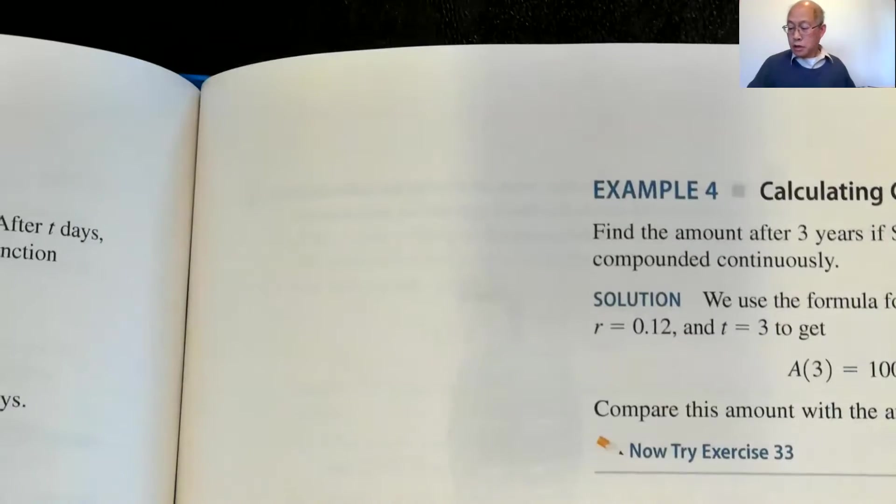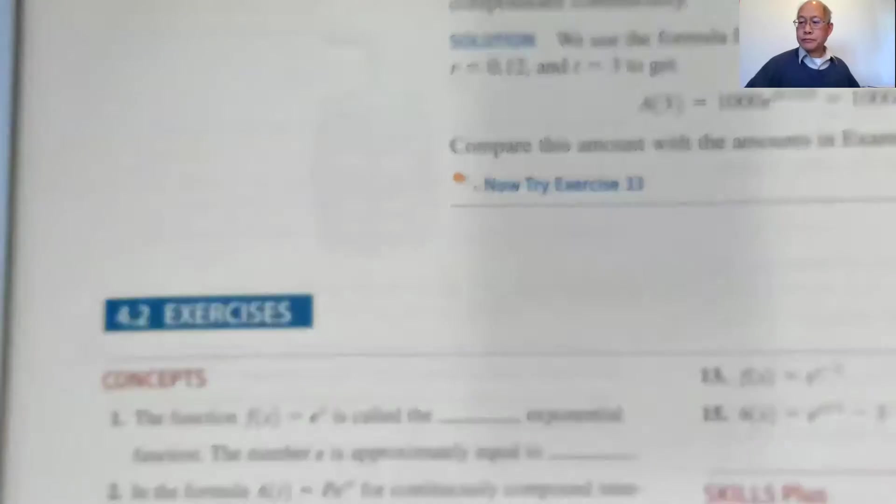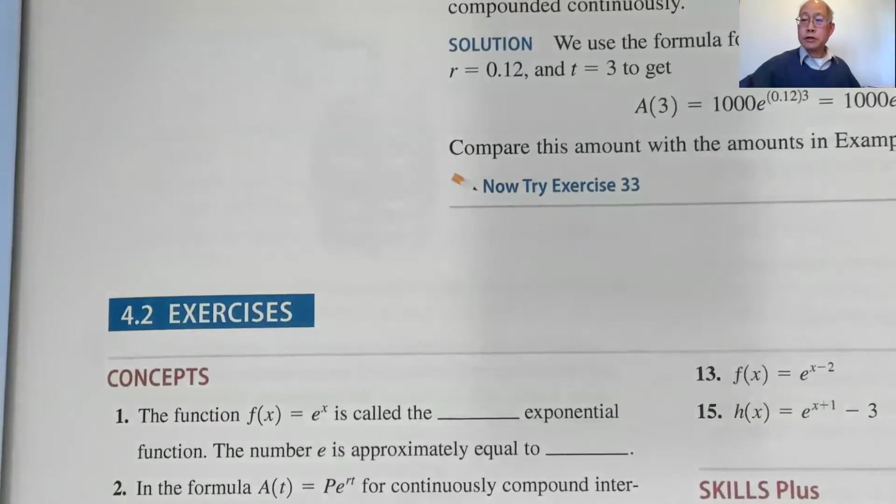All right, so section 4.2, we only have to do 3 through 15 odd, 23 and 24, so page 377, show that to you.